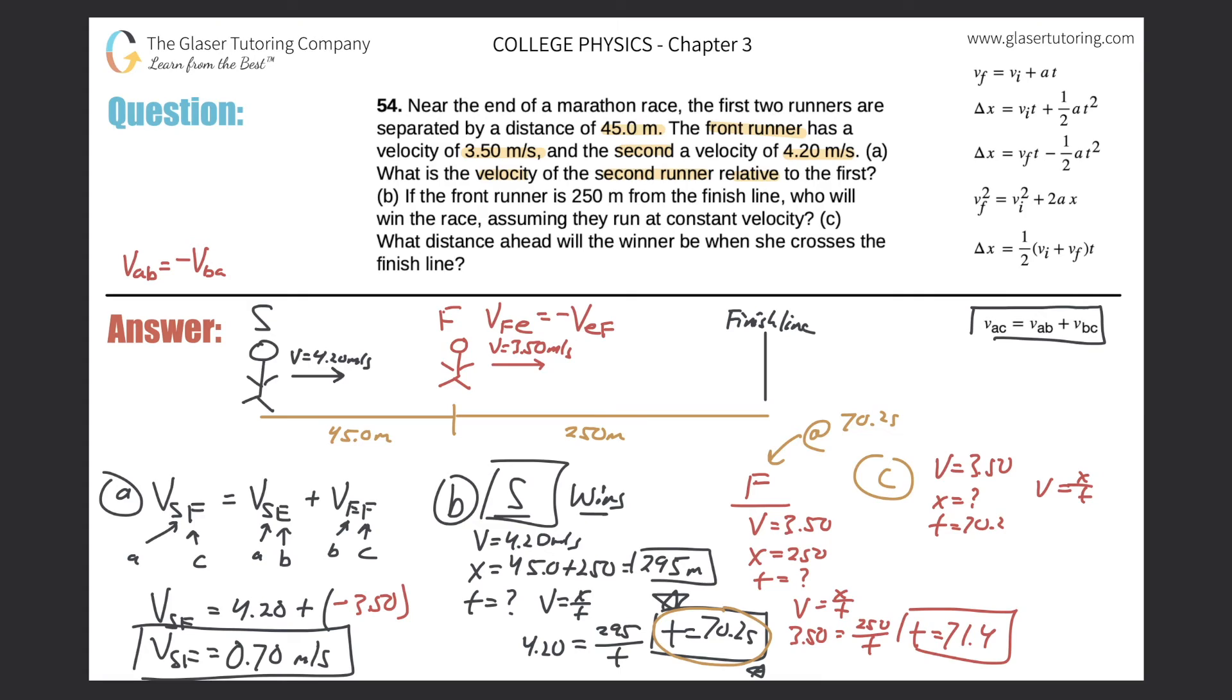So now again, v equals x over t. The velocity is 3.50 equals x over 70.2. So simply just cross multiply. So we got 3.5 times 70.2, 245.7. I got to round, so it's 246. So it's going to be 246 meters. So that's where the first person will be. They're going to be all the way over here, say right about here. They're going to be so close to the finish line, but not there yet, because they have traveled now 246 meters.